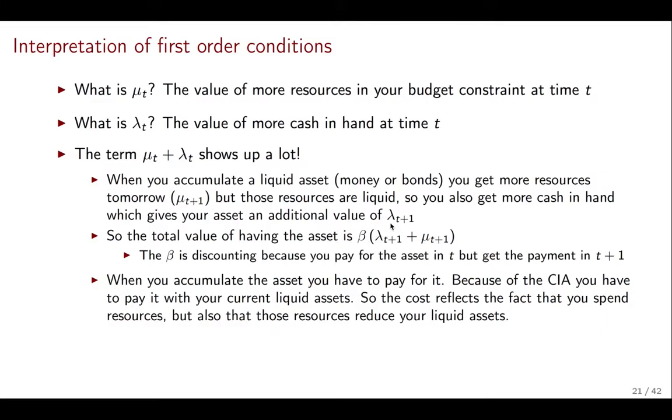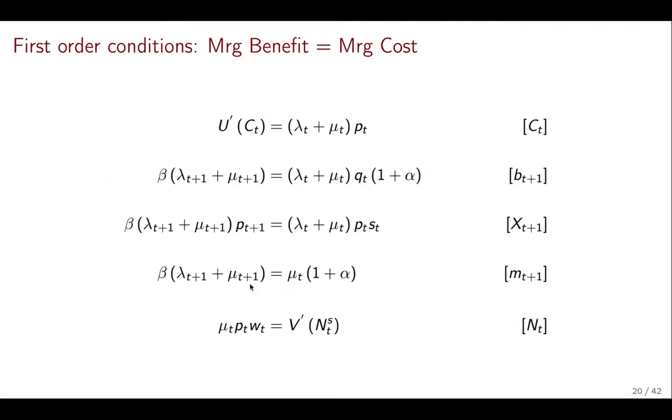So all of these different assets, they give a value λt+1 plus μt+1. But because this value is going to be obtained in the future, it ends up being discounted with beta. So that's just taking into account that you're going to get the value of holding those assets tomorrow. So when you accumulate an asset, you have to pay for it now because the cash-in-advance constraint tells you that in order to pay for things, you need liquid assets. You need that the cost reflects that when you are accumulating something and you're making an expenditure, then both the cost in terms of lower resources and the cost in terms of lower assets shows up.